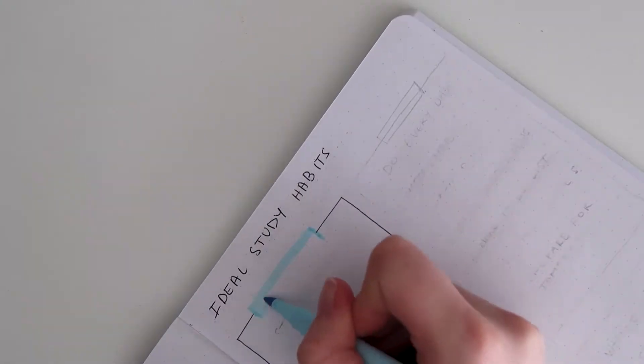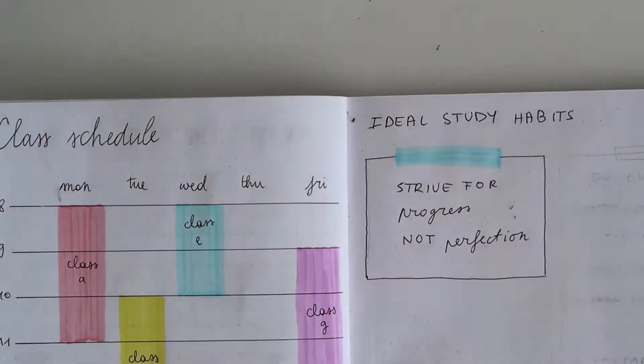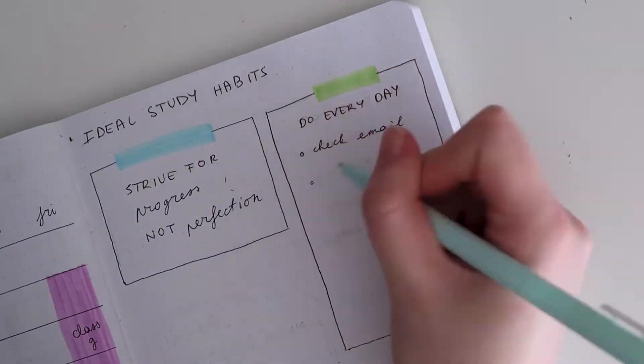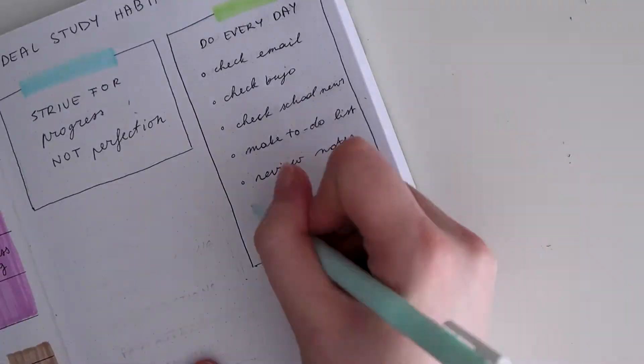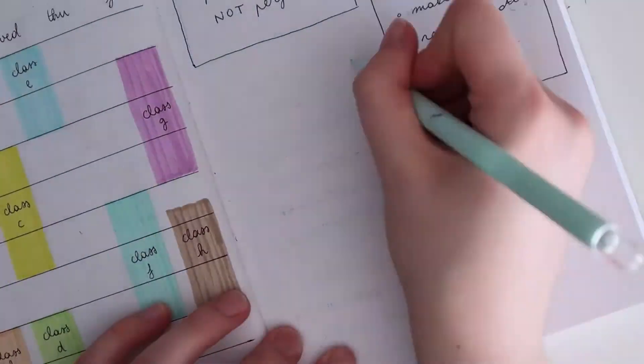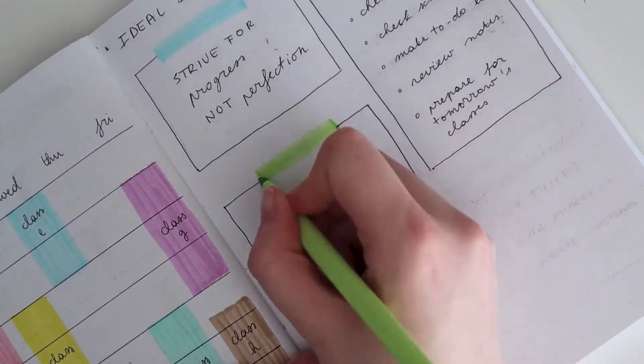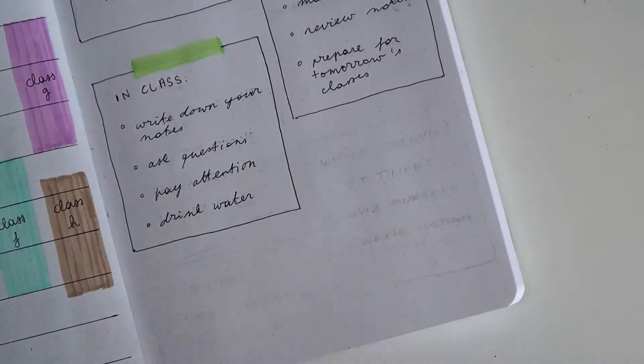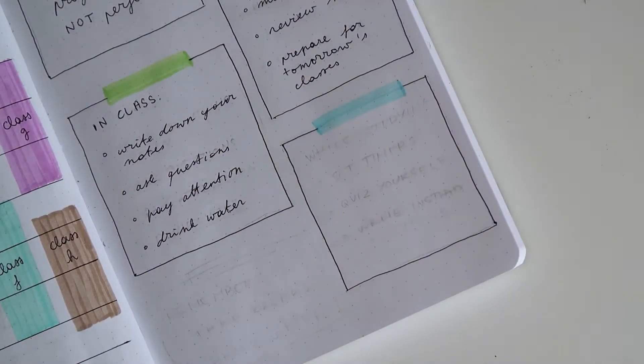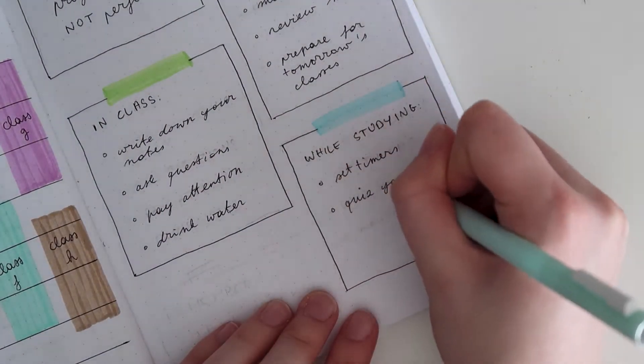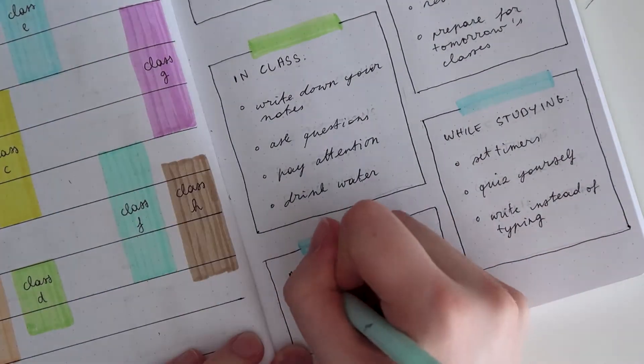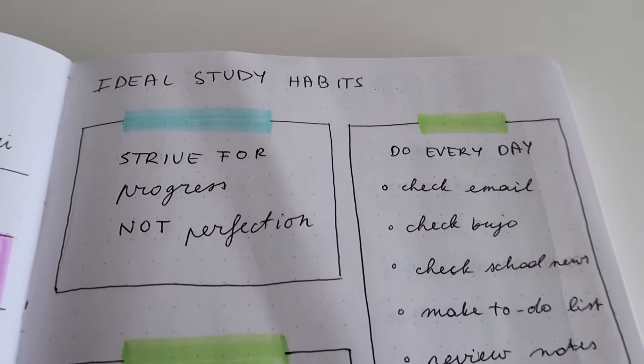This next spread is less practical and more kind of goal setting. I made a spread of all my ideal study habits, things I want to do. I have a quote that says strive for progress not perfection which is very true. I have a list of things I need to do every day that I just want to be reminded of. I have a list of things to remind myself to do in class like write down my notes, ask questions, those kinds of things.